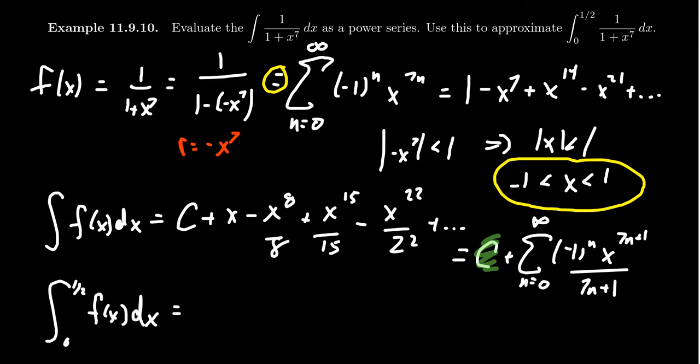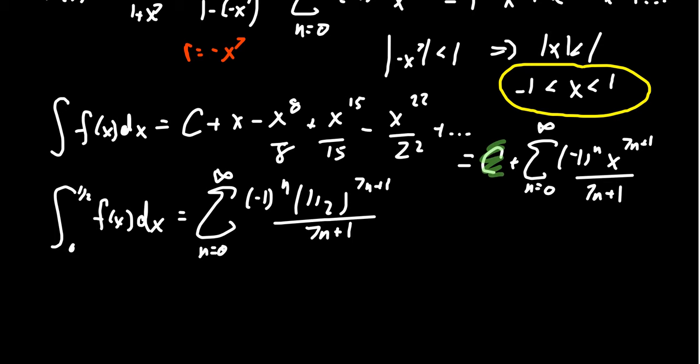So what I'm saying is this integral from zero to one half of f of x dx will equal the sum, where n goes from zero to infinity, we get this alternating series, negative one to the n, we're going to get one half to the seven n plus one, over seven n plus one. And so we see that this integral is equal to an alternating series, that's the word we're looking for.